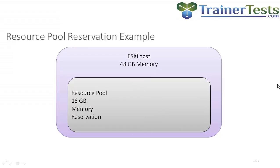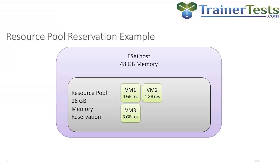So let's take a deeper look at reservations within a resource pool and how they impact the ability to power on our virtual machines. Here we see a resource pool with a 16 gigabyte memory reservation configured on an ESXi host with 48 gigabytes of memory. Now I start booting up virtual machines: VM1 has a 4 gig memory reservation, VM2 has a 4 gig memory reservation, VM3 has a 3 gig memory reservation, and so does VM4. At this point, I've successfully booted four virtual machines, and if you add up all the memory reservations, it comes out to a total of 14 gigabytes. That means 14 gigabytes out of that 16 gigabyte reservation for the pool have been taken.